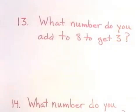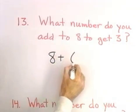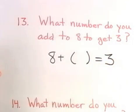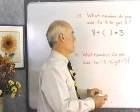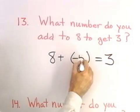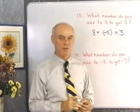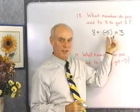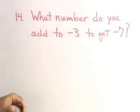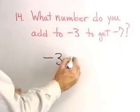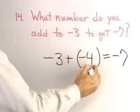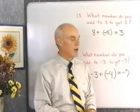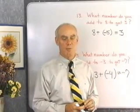Let's look at a word problem. What number do you add to 8 to get 3? Writing it out: 8 plus what number equals 3? Using experience with positive and negative numbers, the number must be negative 5, since 8 plus negative 5 equals 3. Another one: what number do you add to negative 3 to get negative 7? Negative 3 plus some number equals negative 7. The answer is negative 4. You'll be able to work these problems after gaining experience adding positive and negative numbers two at a time.